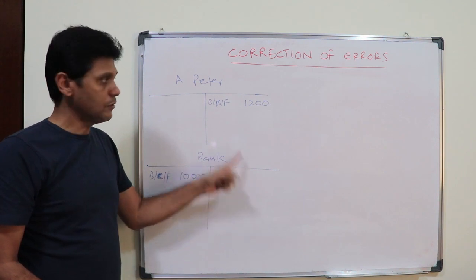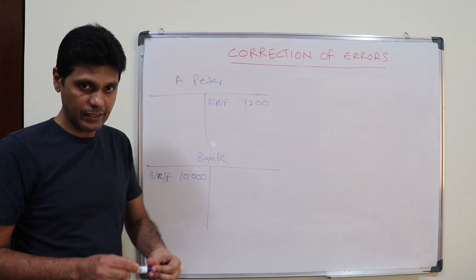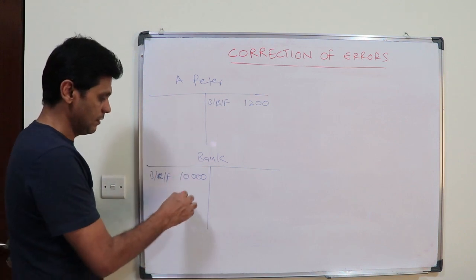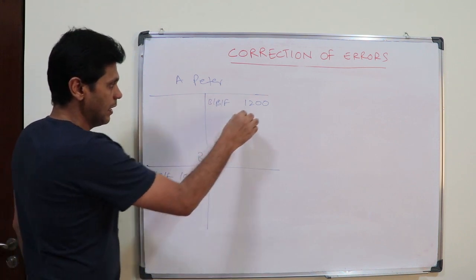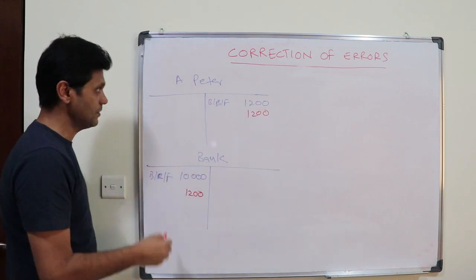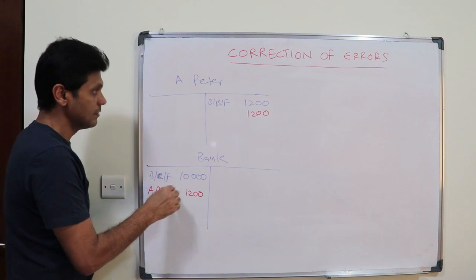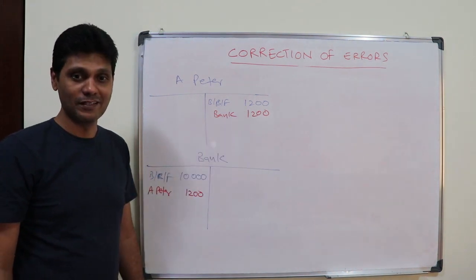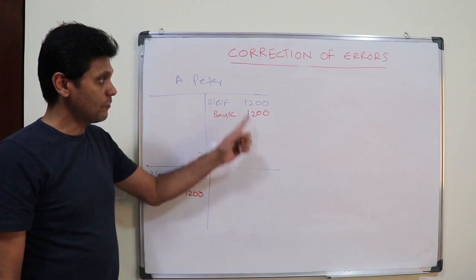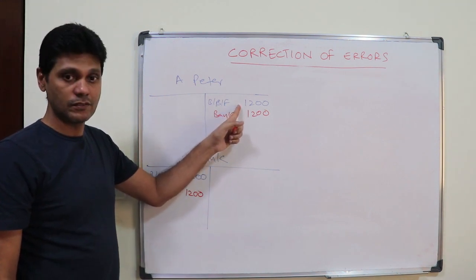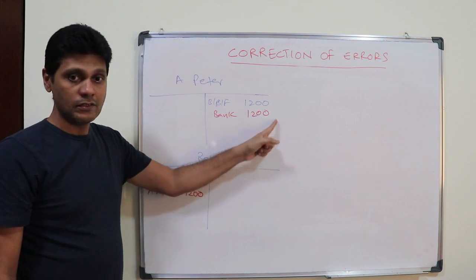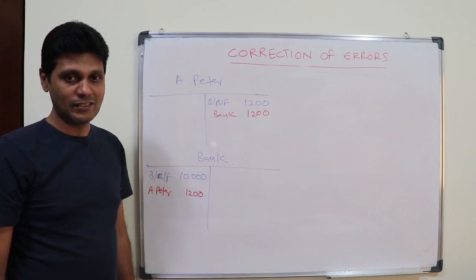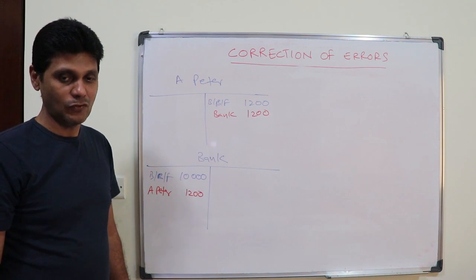When you make the payment, you should credit the bank and debit A Peter's account. But instead, the accountant debited A Peter's account and credited the bank — wait, he debited and credited incorrectly. As a result, the account now shows two thousand four hundred to be paid instead of being cleared.